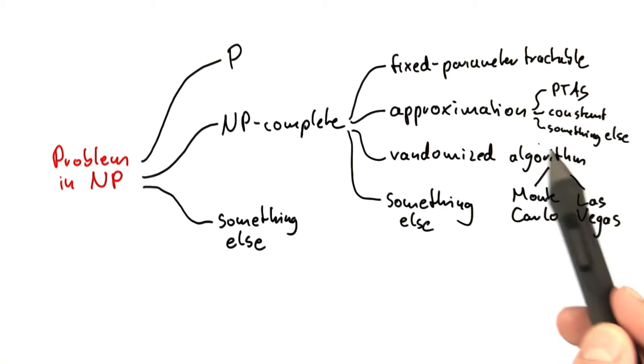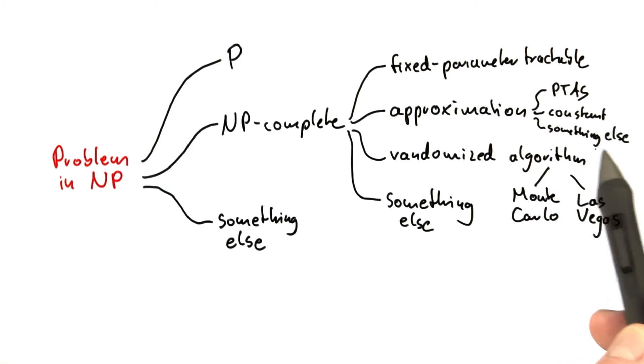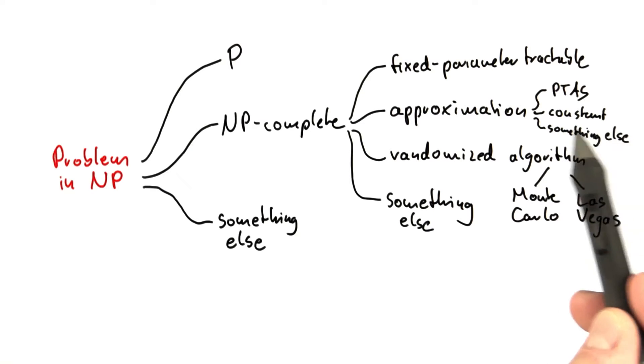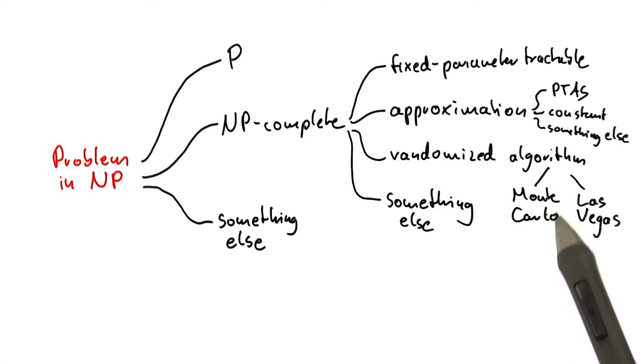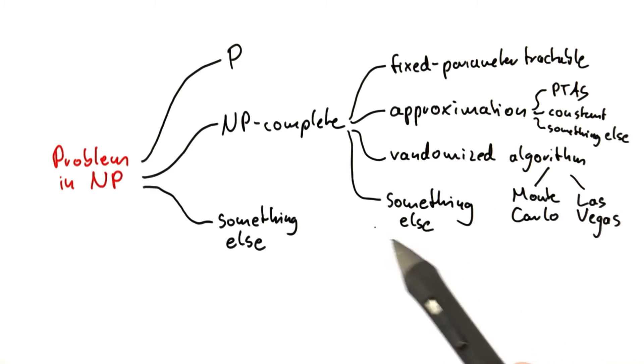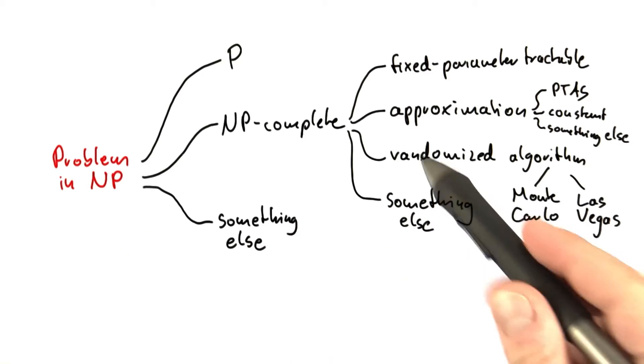And again, we haven't really talked about this something else, but for example, there are some approximation algorithms where you can have a logarithmic approximation factor. And then there are randomized algorithms, Monte Carlo algorithms, and Las Vegas algorithms. And there's many, many other things that we haven't touched upon. So, really a lot of different complexities.